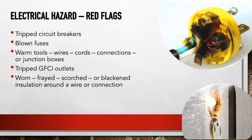Some red flags: if a circuit breaker keeps tripping, don't just keep flipping it back — there's a problem that needs to be fixed. Also watch for blown fuses, warm tools, wires, cords, connections, or junction boxes. The smell of burning rubber is a pretty good sign something's wrong. If your GFCI keeps tripping, or you see worn, frayed, scratched, scorched, or blackened insulation around a wire connection — these are all red flags. Sometimes circuit breakers or fuses go bad; change them out, don't keep using them.